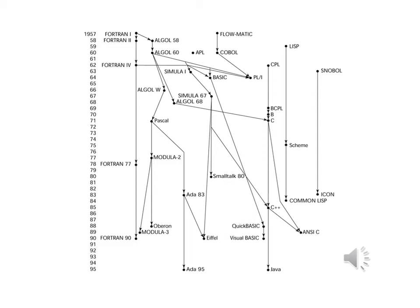You can see how Algol's various versions led to the development of Pascal, and in turn to Modula 2 and Modula 3, as well as Oberon and Ada. You can see how Algol also led to Simula and Smalltalk, and how various dialects of BASIC led to Visual BASIC.